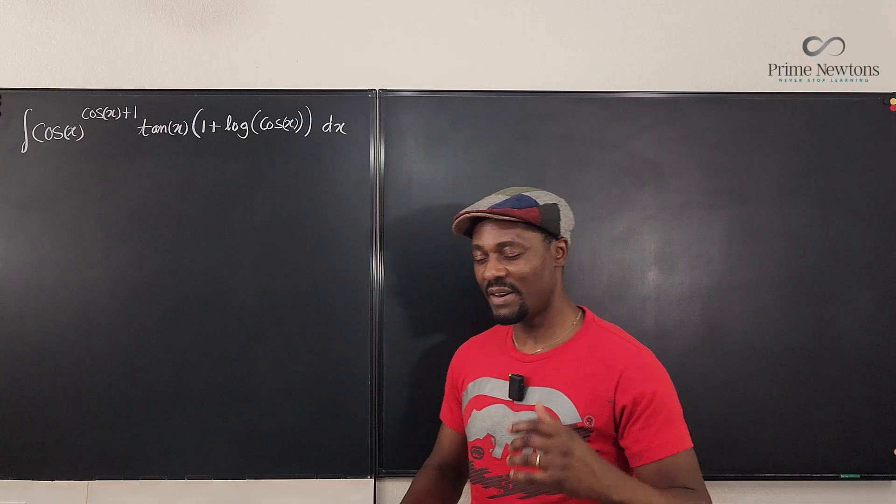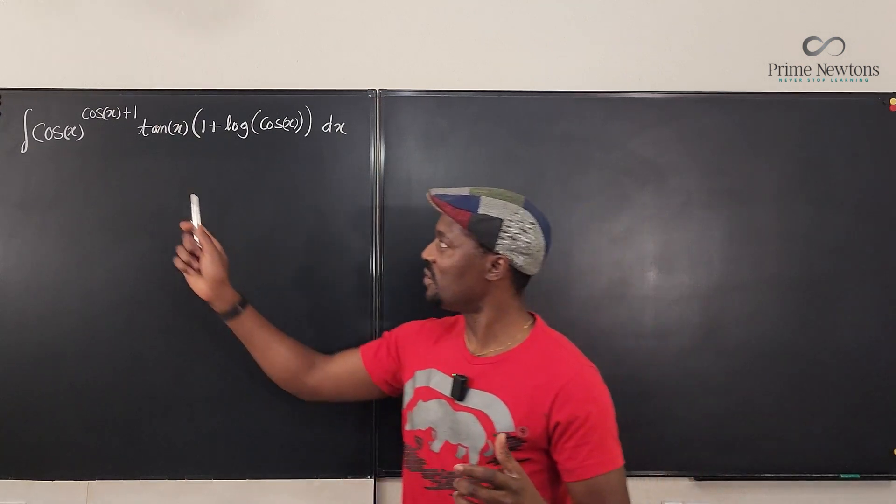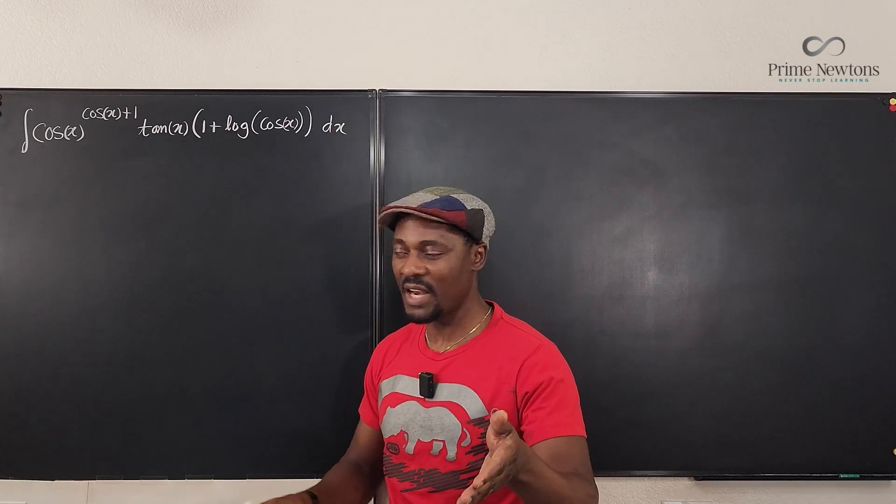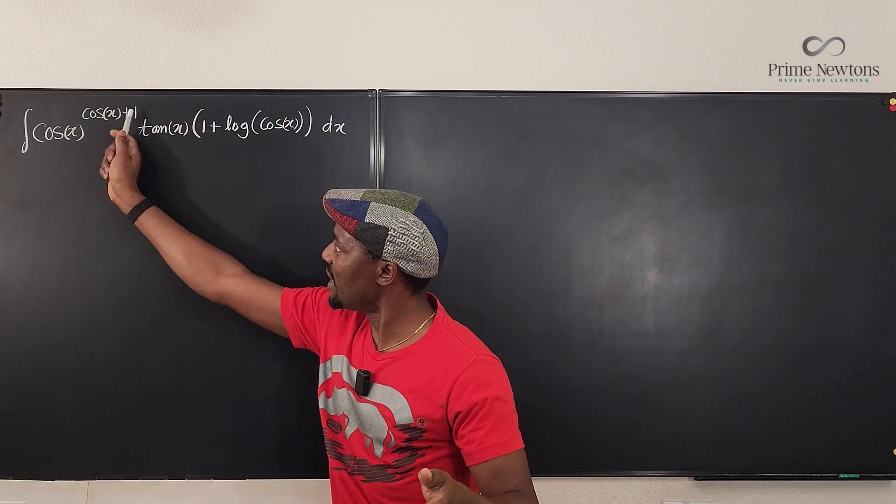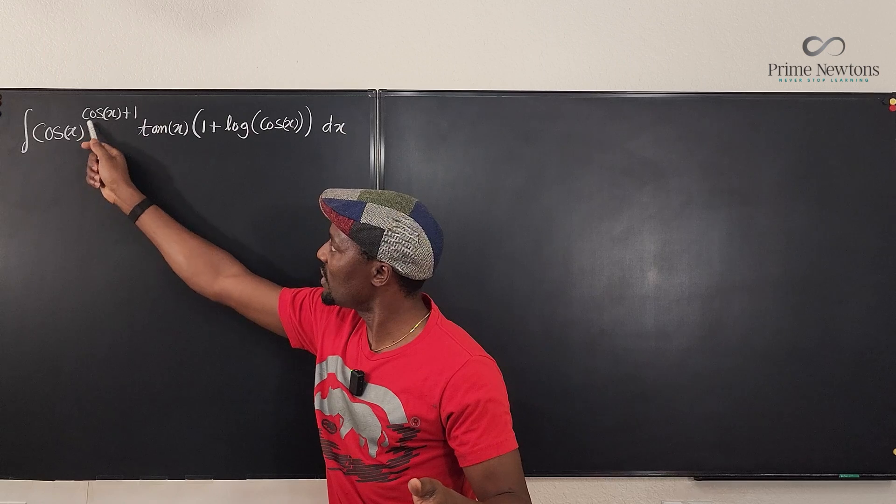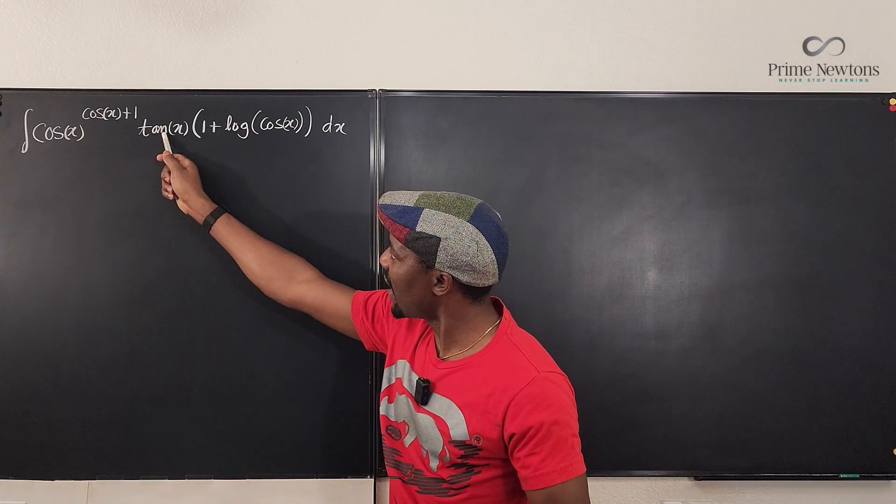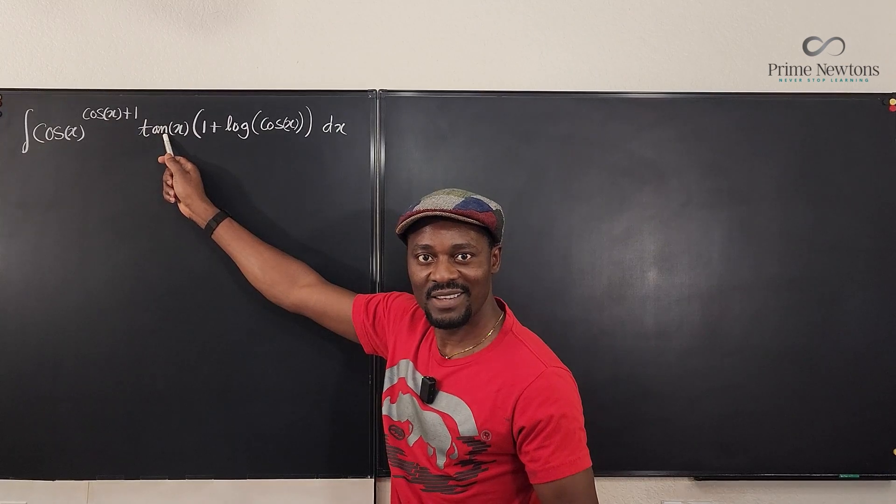So first of all, there is this simplification I would like to do, which is to get rid of this plus one, because I know that cosine x raised to power this will be this to this power times cosine x. But cosine x times tan x is sine x.